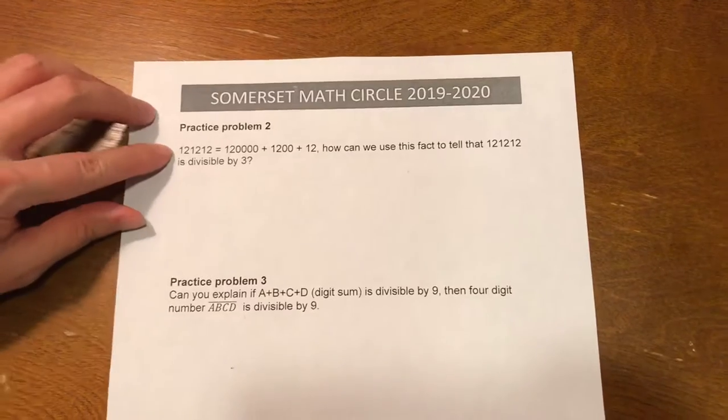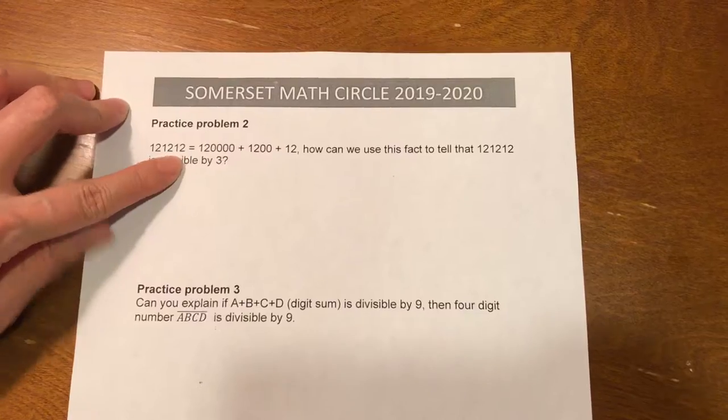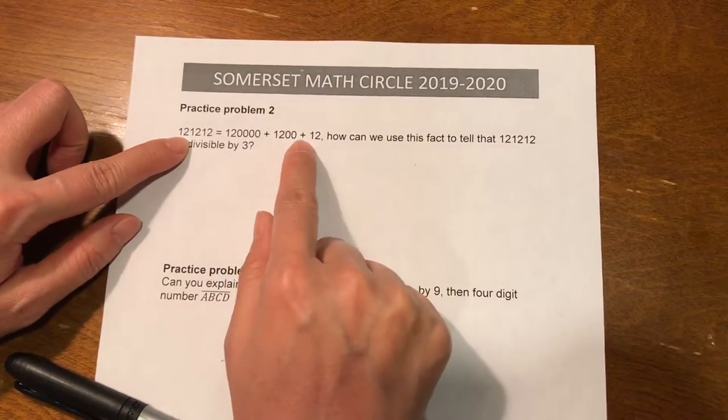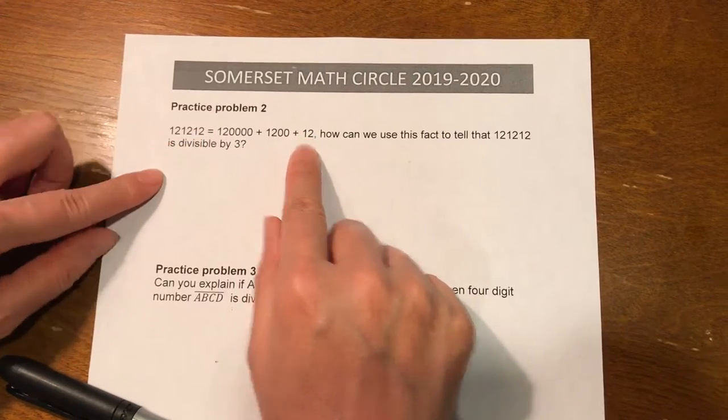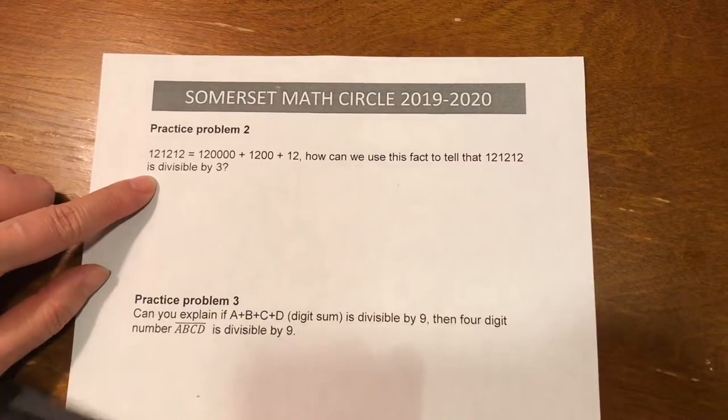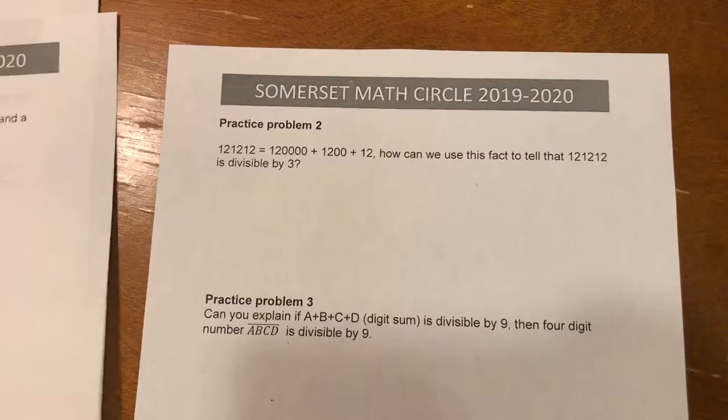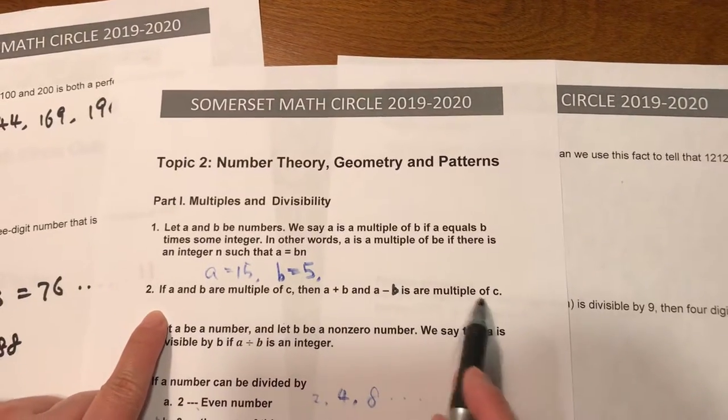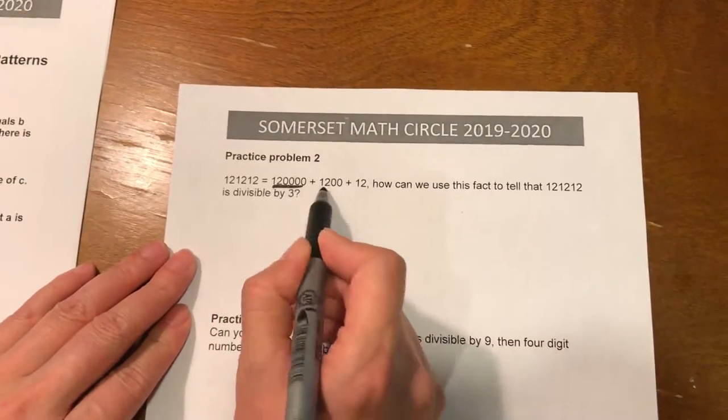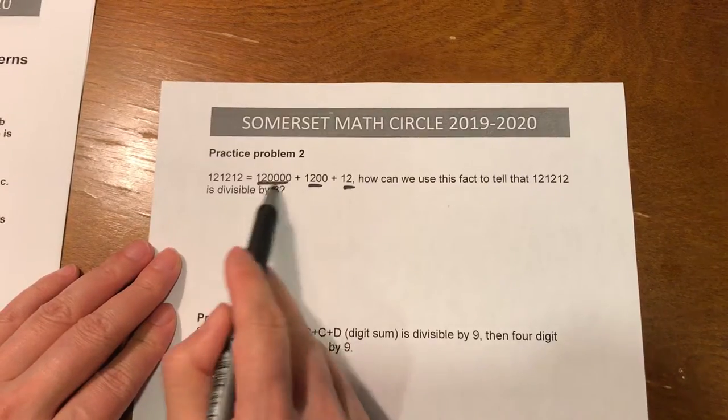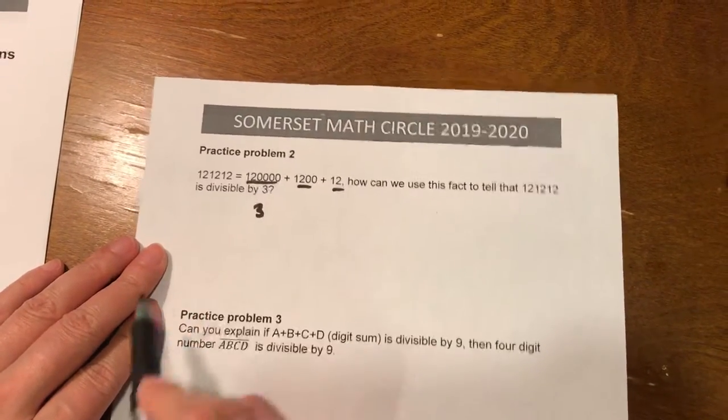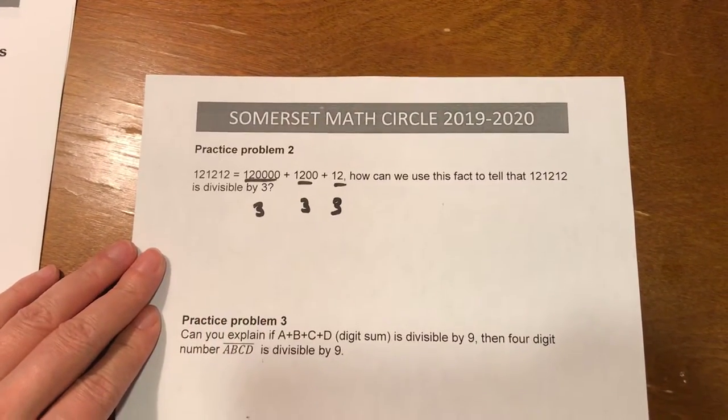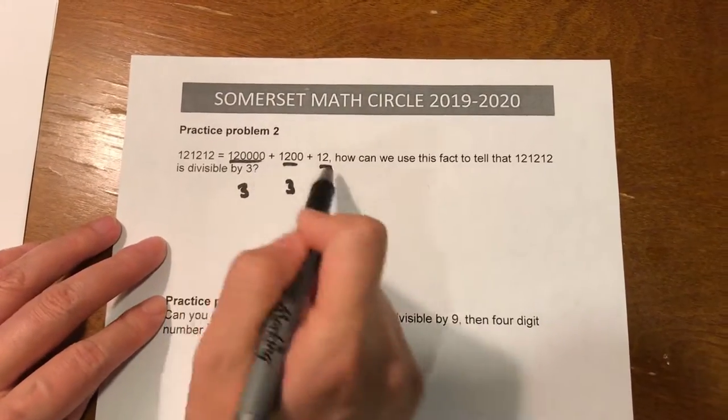Practice problem 2. This is a long number, 121212. That can be separated into two parts. That's 120,000 plus 1,200 plus 12. Then we separate these numbers into three parts. How can we use this fact to tell that this number is divisible by 3? As we said earlier, let's go back to the properties. If A and B are multiples of C, then A plus B is a multiple of C. So each term here, we can prove they can be divided by 3 because this number, we add all the digits up. This is 3. So this number can be divided by 3. This number added up is also 3, and this is also 3. So each single term is a multiple of 3 or can be divided by 3. So this whole number can be divided by 3.